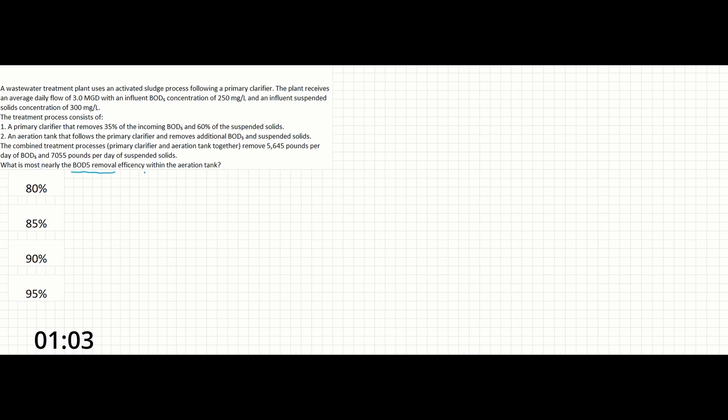The first thing we can recognize in this problem is that we need to find the BOD5 removal efficiency of the aeration tank. This means that all of the information provided about the suspended solids can be ignored. Let's find the answer in four steps. For step one, our goal is to find the total BOD5 entering the plant.